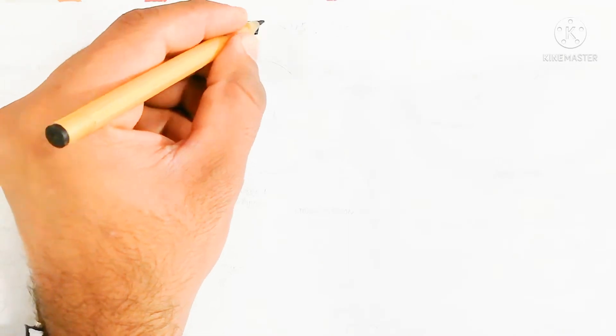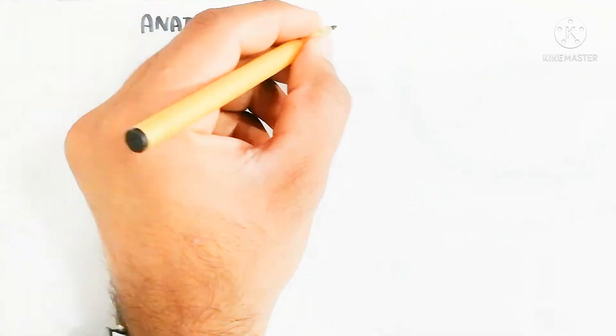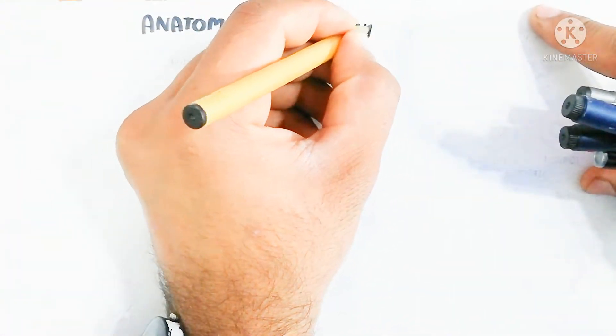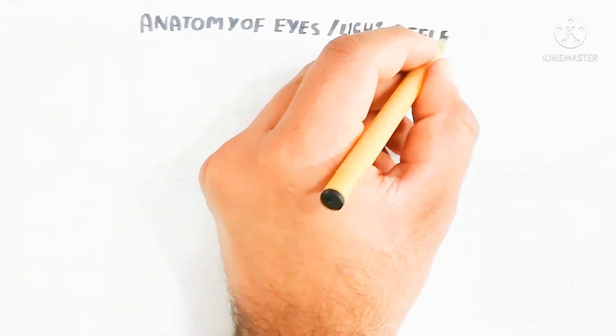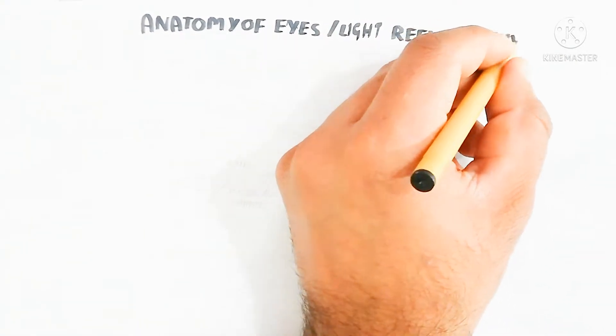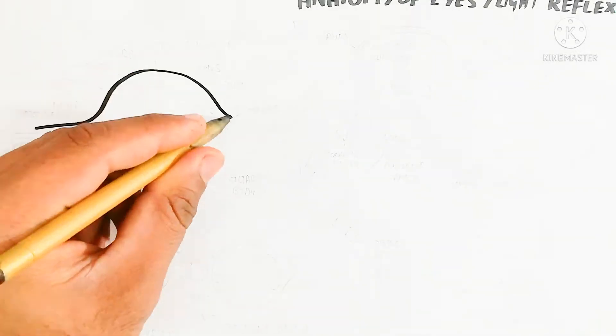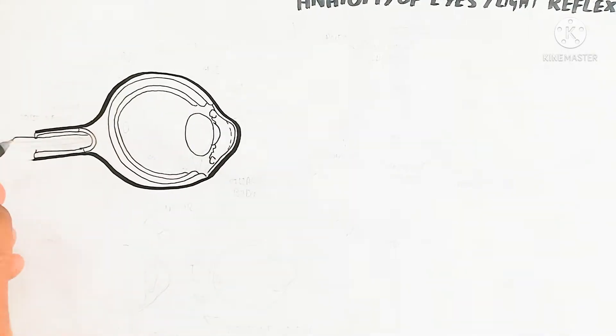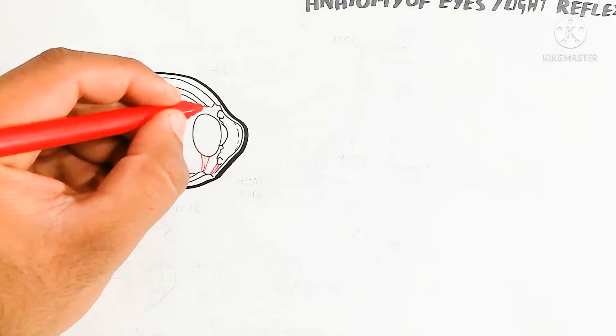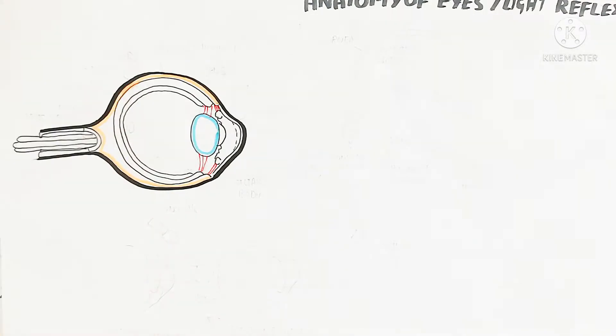Hello. In this video we will discuss the anatomy of the eye and the light reflex pathway due to the nervous system, which detects light and makes an image to transmit into the brain for detection of what the object is. Here I am drawing the general structure of the eye for understanding first.